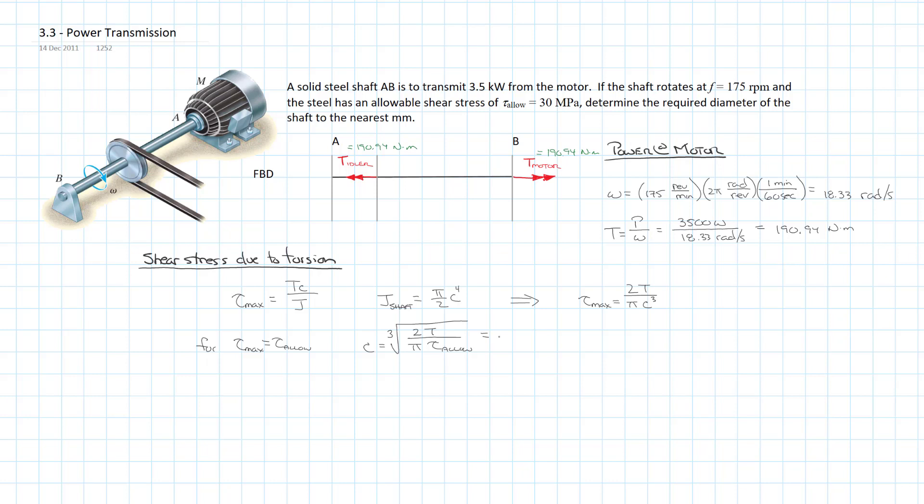We can plug in our numbers because we have everything we need. It's 2 times 190.94 newton meters, all divided by π times tau allowable, which is 30 megapascals or 30 times 10 to the sixth. So we get a value of 15.9 millimeters.